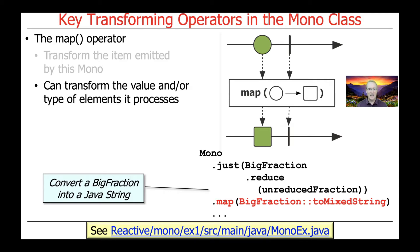We pass into MAP a method reference to BigFraction::toMixedString, which is a transformation operator that takes a so-called improper BigFraction and turns it into a mixed fraction. For example, 18/4 would become four and one half, and that string is returned. You can find the larger example at the link at the bottom of the slide, and we'll walk through it before finishing the discussion on Monos.